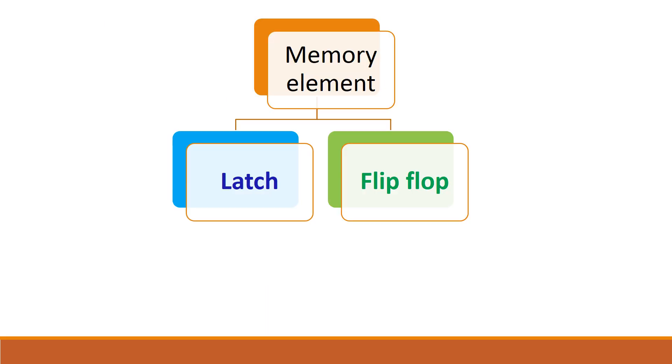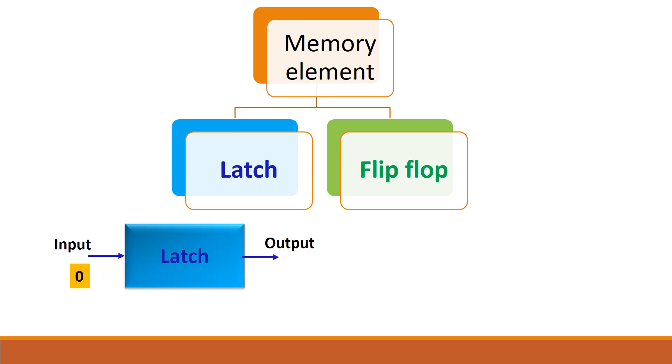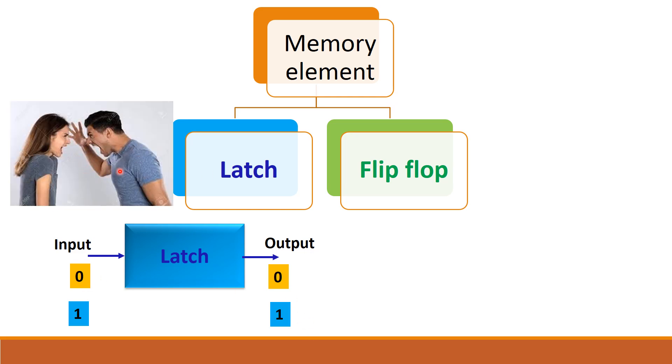First let us see about latch. In latch if I give some input I will get the output. If I give 0 input immediately the latch will give you 0 as output and if the input changes to 1, output will also change to 1. For example you can take an argument, if someone talks something immediately we will respond. The latch is like that. But this is not a good behavior we know. So this type of condition, suppose the input is continuously changing, this may affect the output. So this is considered to be unstable.